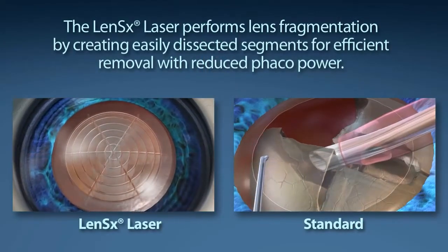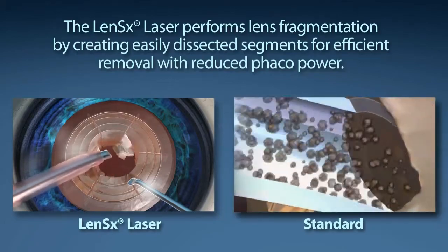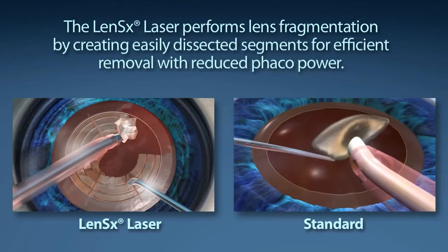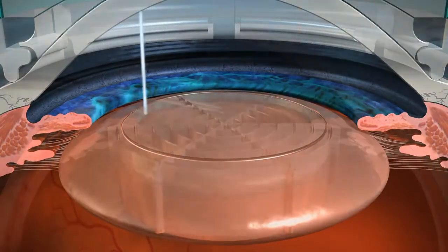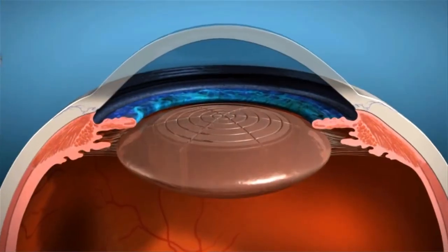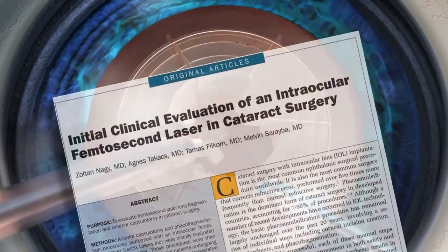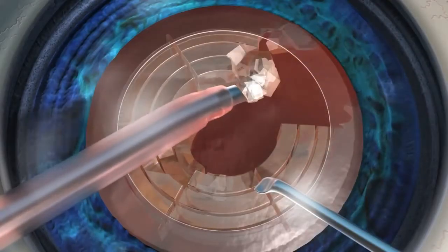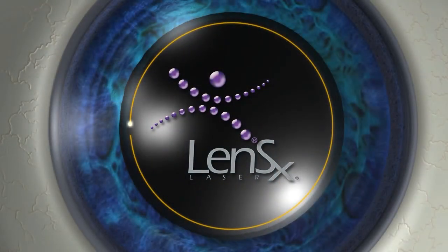Standard cataract surgery requires a phaco emulsification machine to segment and remove the content of the cataract. The goal of your surgeon is to reduce the amount of phaco energy used to remove your cataract. The LensX laser performs lens fragmentation, creating easily dissected segments for efficient removal with little or no phaco power. With the laser pulses utilized, the LensX laser provides the surgeon a 43% reduction in phaco power and a 51% reduction in phaco time compared to the standard cataract procedure, offering a new level of precision and reproducibility in ophthalmic surgery.